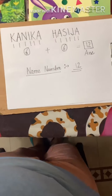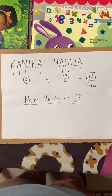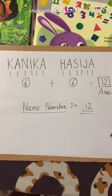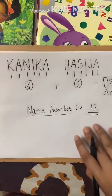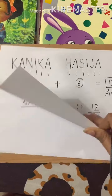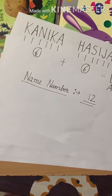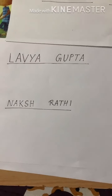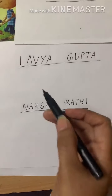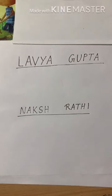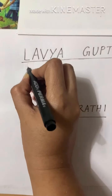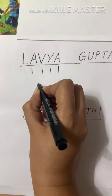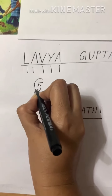Let's take another example. Here I have written one more name — Lavyaa Gupta. Let's count the alphabets in Lavyaa: 1, 2, 3, 4, 5. So how many are there? 5.